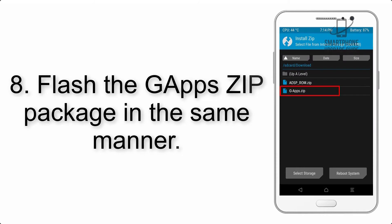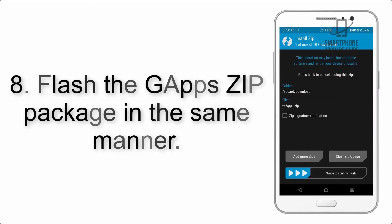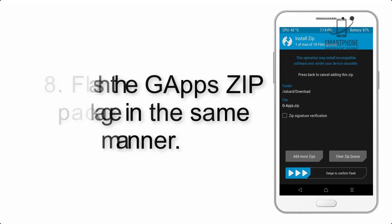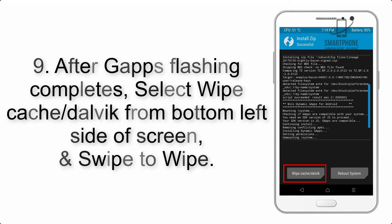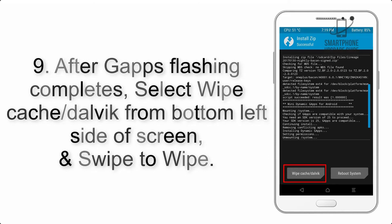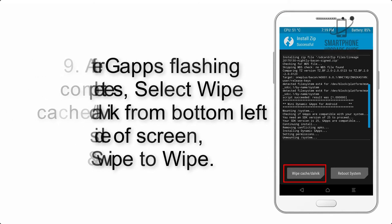Step 8: Flash the GApps zip package in the same manner. Step 9: After GApps flashing completes, select Wipe Cache and Dalvik from the bottom left side of the screen, and swipe to wipe.